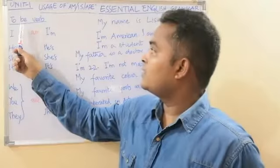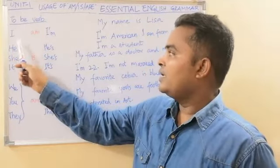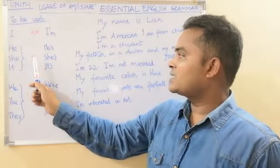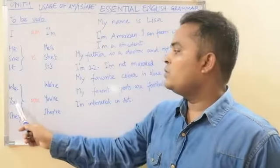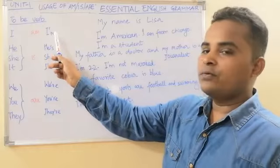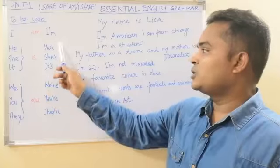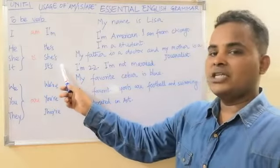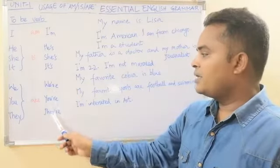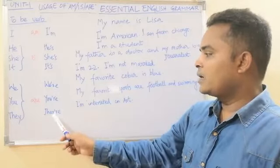Let's do the to be verb. I am — the short form is I'm. He is — short form he's. She is — short form she's. It is — short form it's. We are — short form we're. You are — short form you're. They are — short form they're.